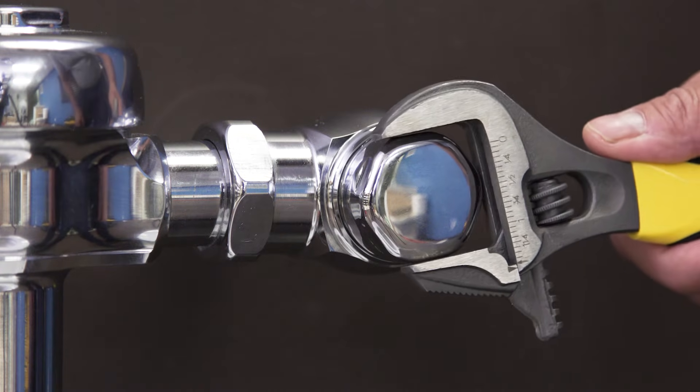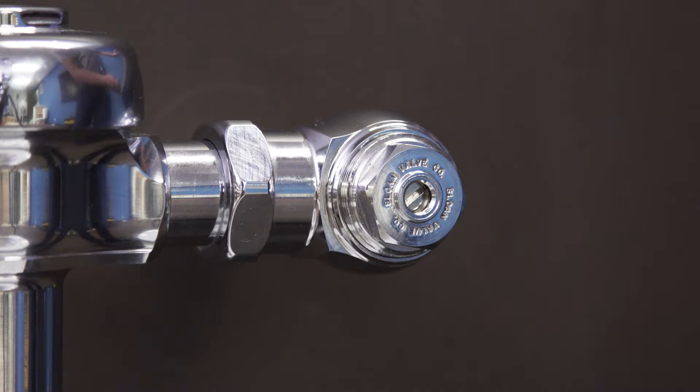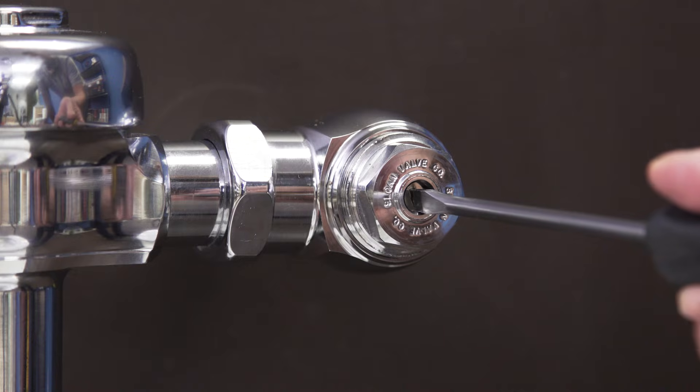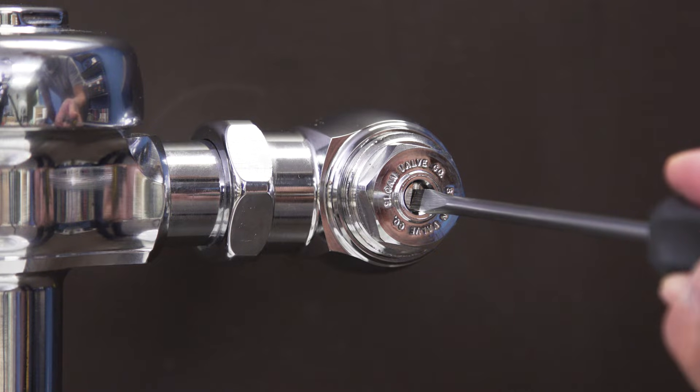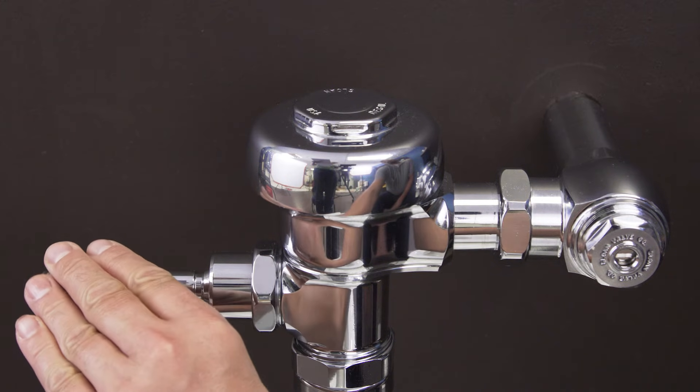First, shut off the water to the flushometer. Remove the cap and use a flat blade screwdriver to turn the screw clockwise until the control stop closes. Next, hold down the handle to remove any remaining water.